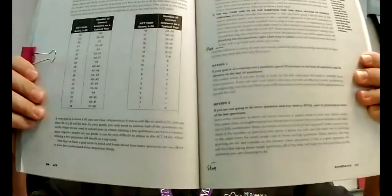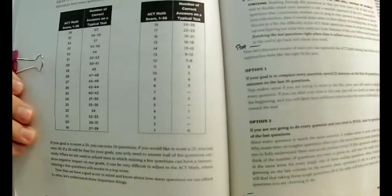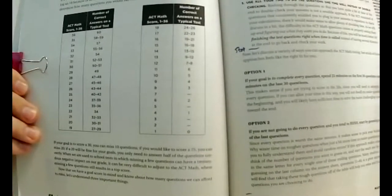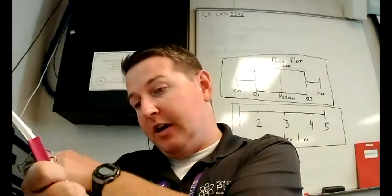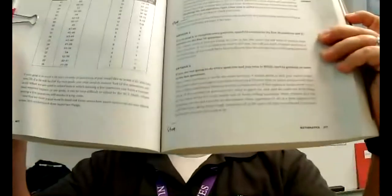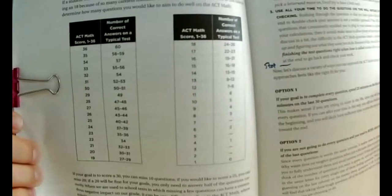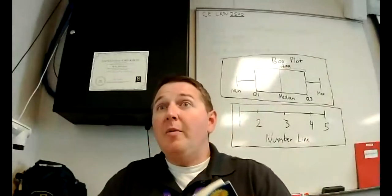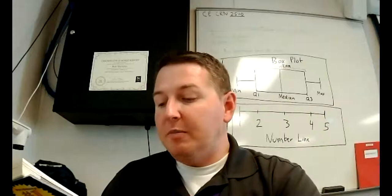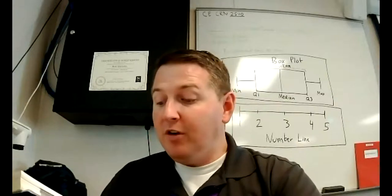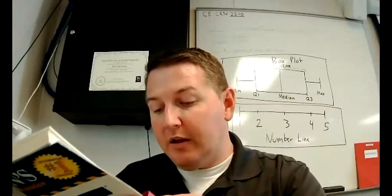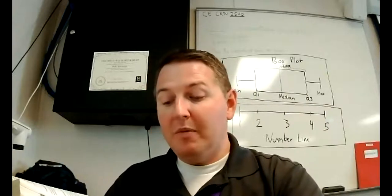I had IT come and tweak the speaker, so hopefully the sound comes out a lot better. Looking at this chart: on the ACT math section, if you need a 36, you need to get nearly 60 math questions correct. If you only need a 21, you only need to get 30 to 33 math questions correct. This chart tells you how many math questions you need to get right based on your target score. So if your goal is a 30, you can miss 10 questions. If you'd like to score 25, you can miss 20. If a 20 will be fine for your goals, you only need to answer half the questions correctly.